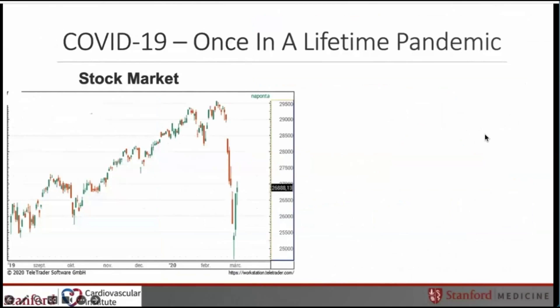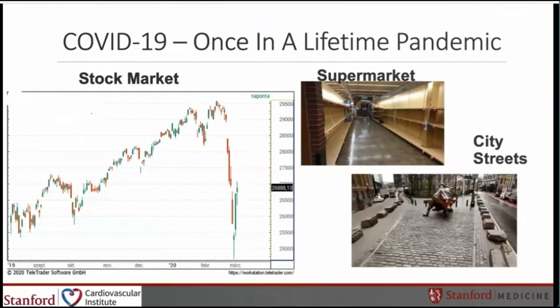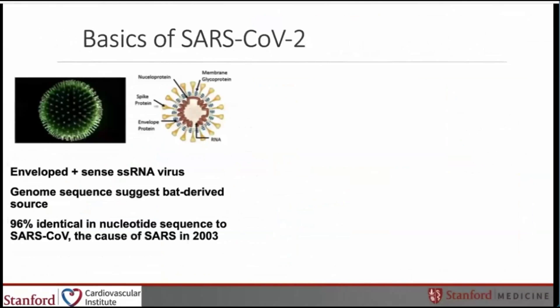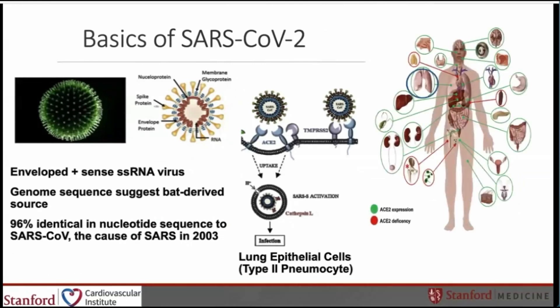This is a once-in-a-lifetime pandemic — stock markets crashed, supermarkets were completely emptied, and city streets were abandoned. The basics of SARS-CoV-2 are the following: the general structure includes the spike protein, envelope protein, RNA, nucleoprotein, and membrane glycoprotein. This is an enveloped, positive-sense, single-stranded RNA virus. The genome sequence suggests a bat-derived source and was 96% identical in nucleotide sequence to SARS-CoV, the cause of SARS in 2003. It binds to the ACE2 receptor, predominantly seen in lung epithelial cells but also in the cardiovascular and GI systems.